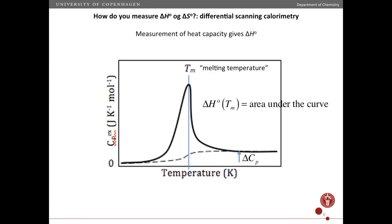Here is a slightly different kind of calorimetry that you can also use to measure delta H standard, and also delta S. It's called differential scanning calorimetry. And so that involves measuring the heat capacity as a function of temperature. So you have the heat capacity here, temperature here...